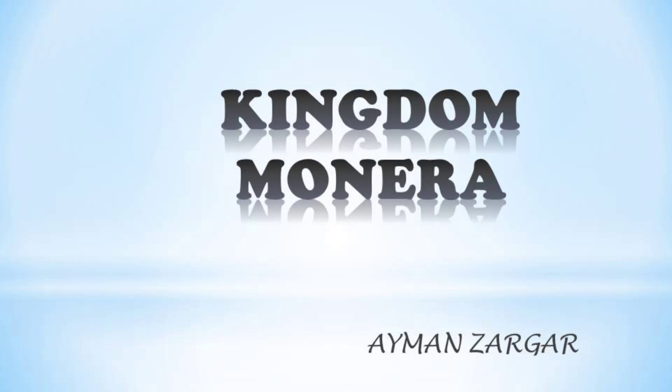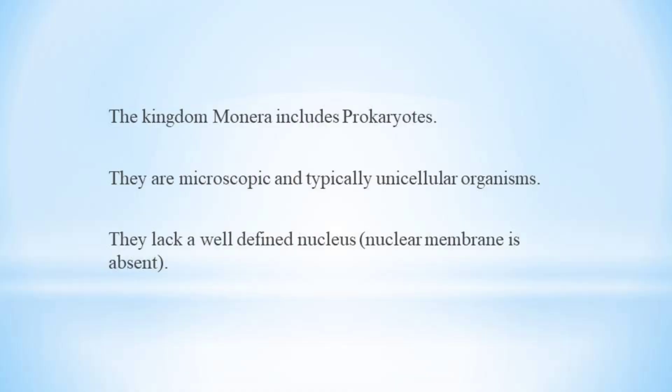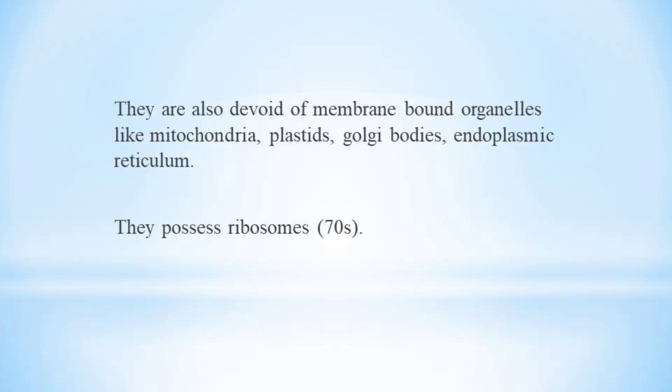Kingdom Monera includes prokaryotes. They are microscopic and typically unicellular organisms. They lack a well-defined nucleus, meaning the nuclear membrane is absent. They are also devoid of membrane-bound organelles like mitochondria, plastids, Golgi bodies, and endoplasmic reticulum.